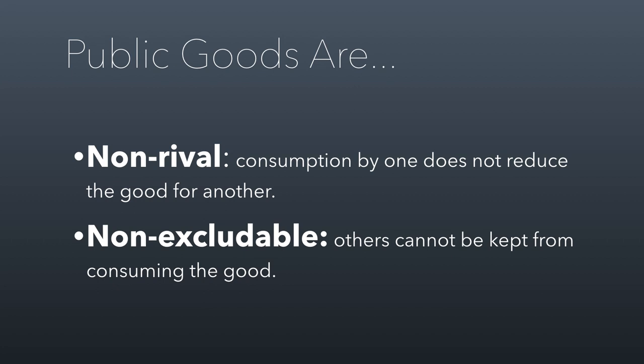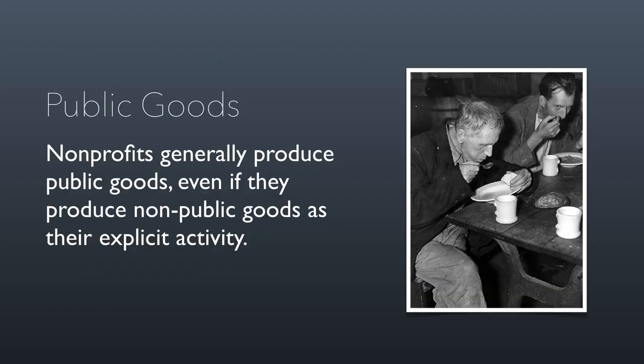Nonprofits are interesting because a lot of them don't actually produce public goods directly, but they produce them indirectly. Take a community food bank as an example. A food bank is not itself a public good — it could prevent you from getting food if your income is too high, so it's not non-excludable. And it certainly isn't non-rival because the amount of food taken out of a food bank meaningfully diminishes the amount available to others. So the question is, is this an aberrant nonprofit failing to produce public goods?